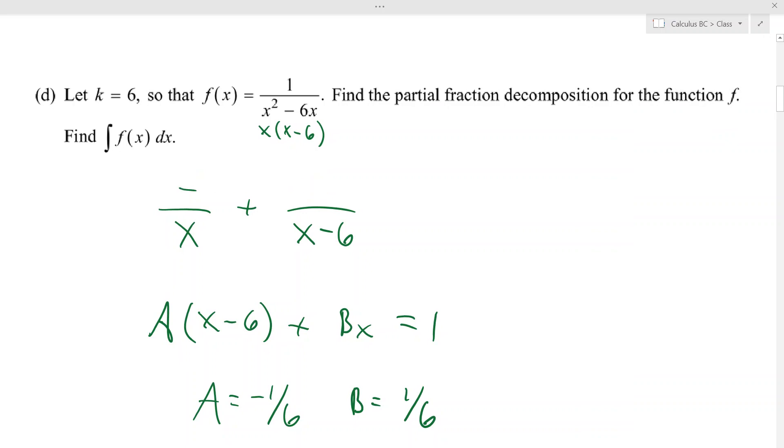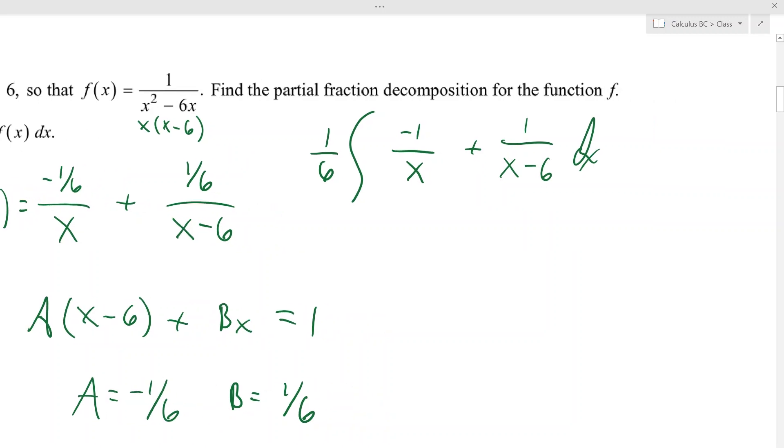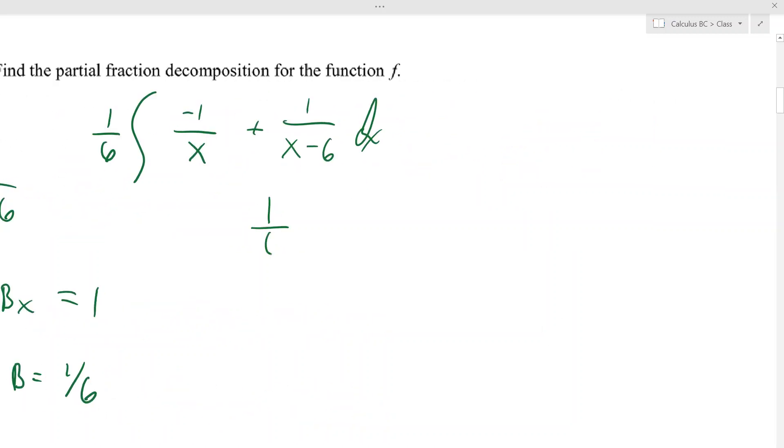Cool, so I'm just gonna put the one sixth out front, but first let's drop them in here, right? So negative one sixth, one sixth. That's what f of x equals—what says s first? Boom. So the integral, this is the second part, I'm gonna put the one sixth out front of negative one over x plus one over x minus six dx.